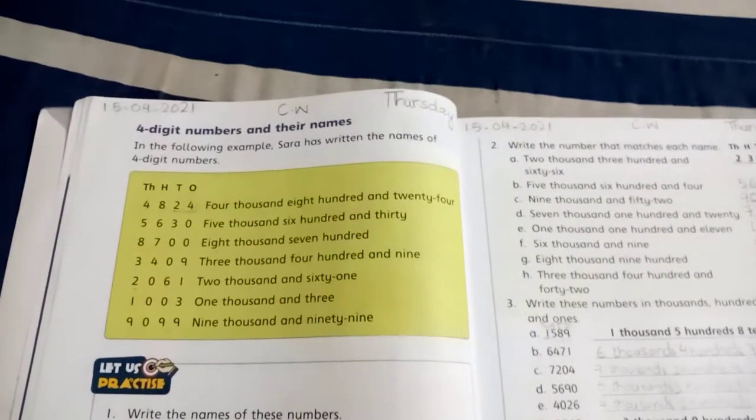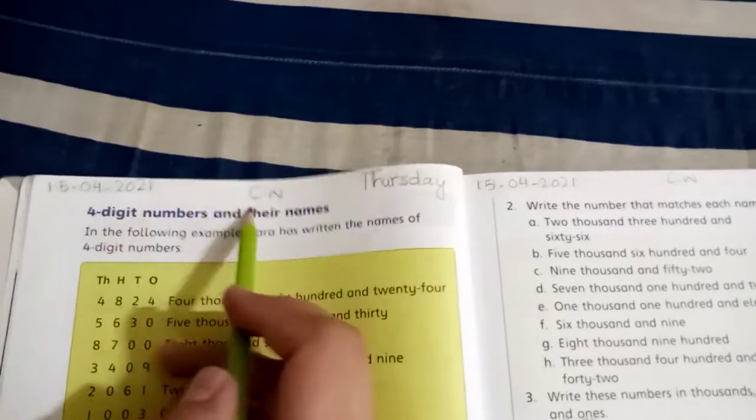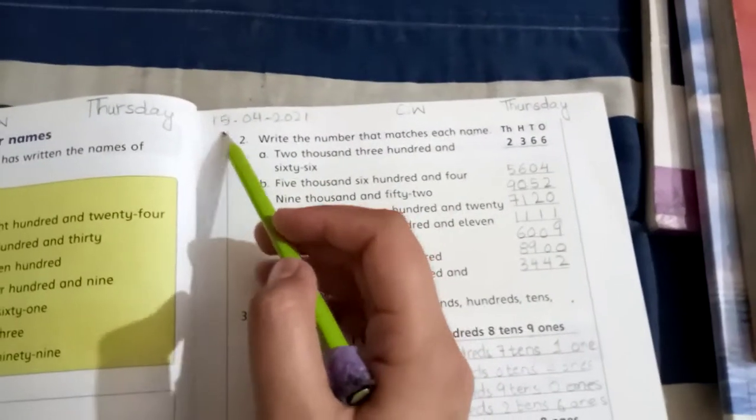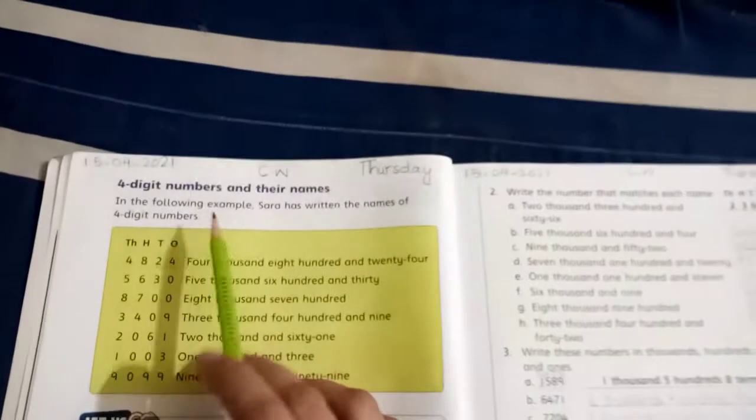On this page today we will start the work. Write the date here: 15-4-2021, classwork, and Thursday. Write the date on the next page as well: 15-4-2021, classwork, and Thursday.